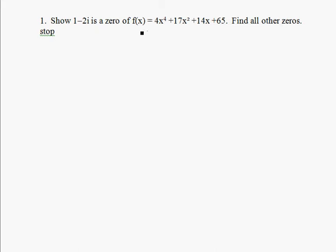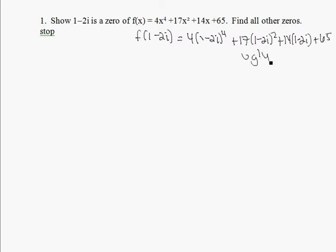One way to do it is to take 1 minus 2i and plug it into f, so that means we have to do 1 minus 2i to the 4th power, plus 17 times 1 minus 2i squared, plus 14 times 1 minus 2i plus 65, which is ugly and it'll take a long time. So that would show us that 1 minus 2i is a root.